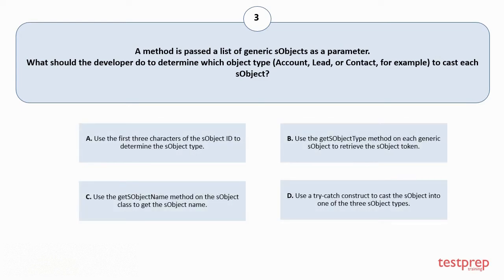A. Use the first three characters of the sObject ID to determine the sObject type. B. Use the getSObjectType method on each generic sObject to retrieve the sObject token. C. Use the getSObjectName method on the sObject class to get the sObject name. D. Use a try-catch construct to cast the sObject into one of the three sObject types. The correct answer is option B.